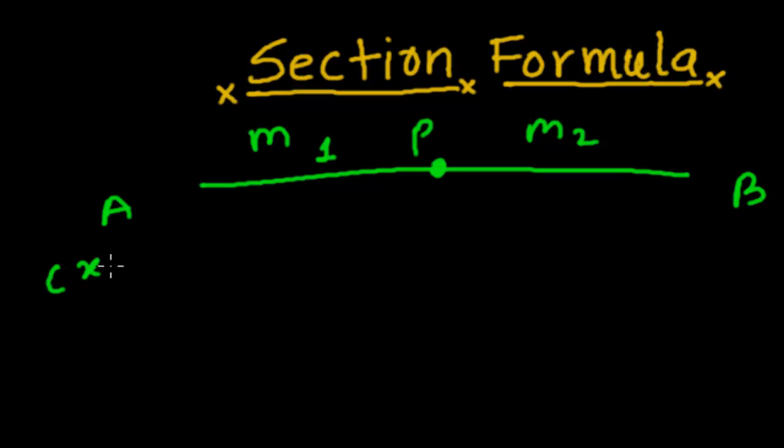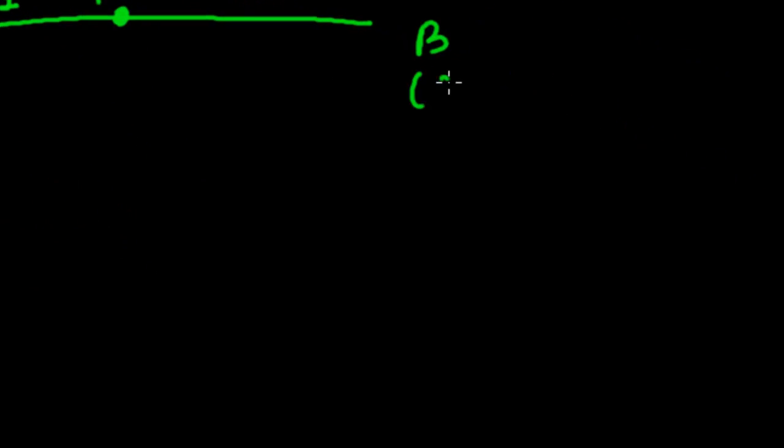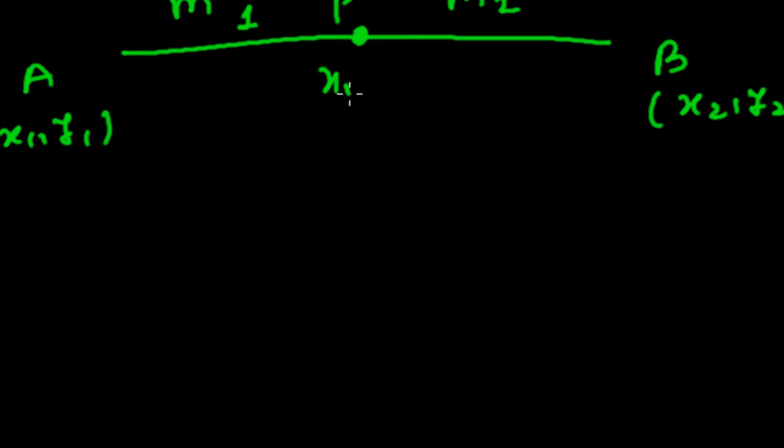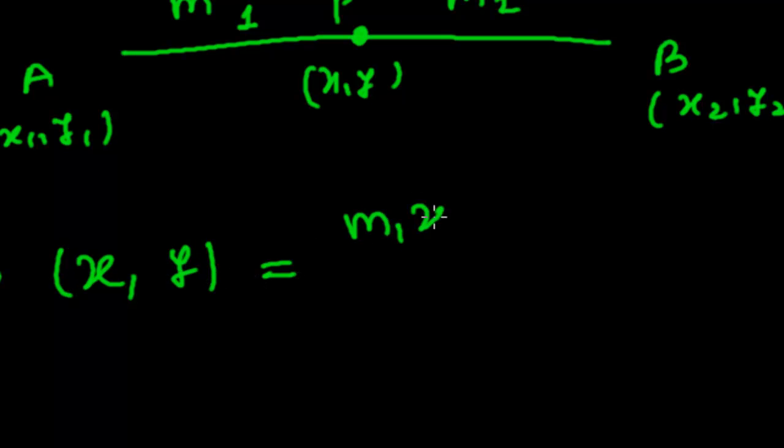And coordinates of B are x2, y2, and if x, y are the coordinates of P, then the coordinate of x for point P, I mean the P point (x, y), is given by the formula m1*x2 plus m2*x1 whole divided by m1 plus m2.